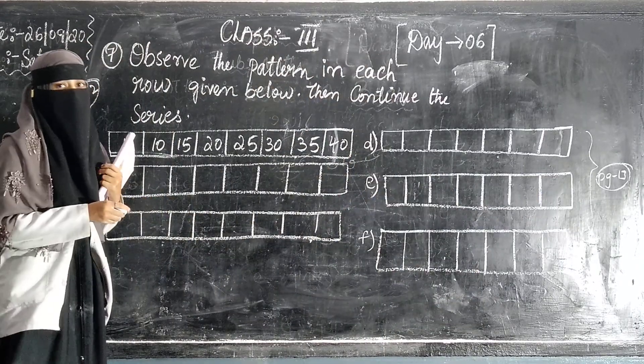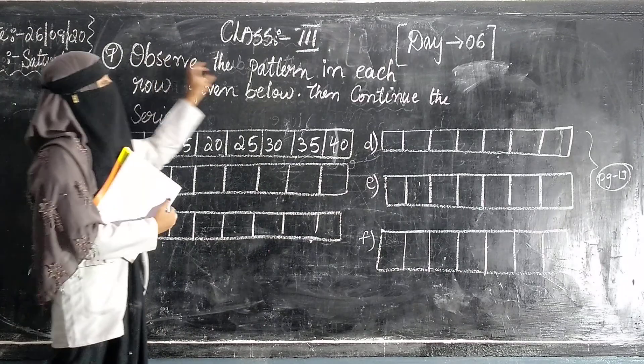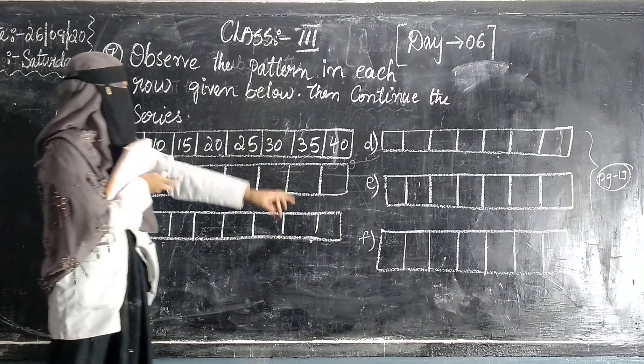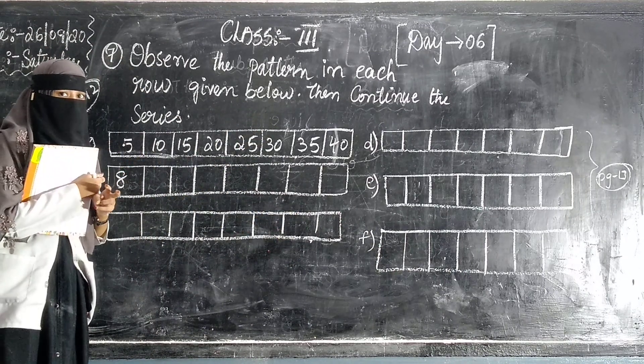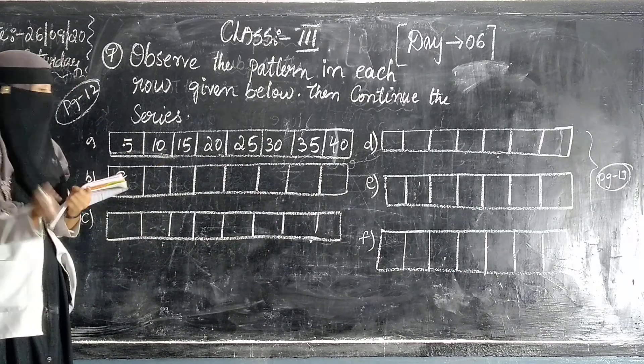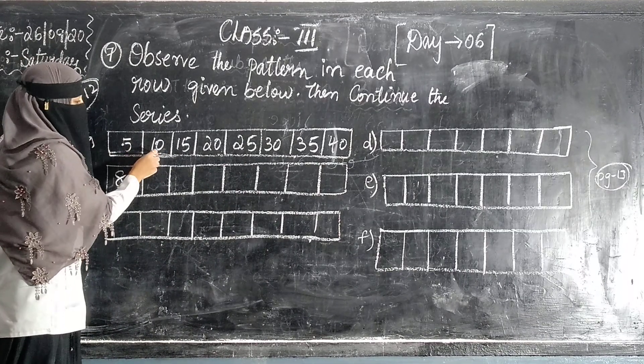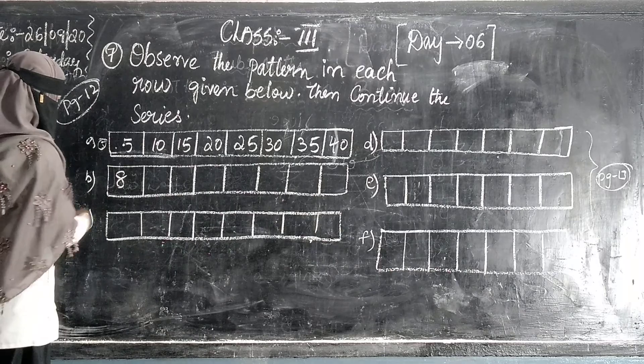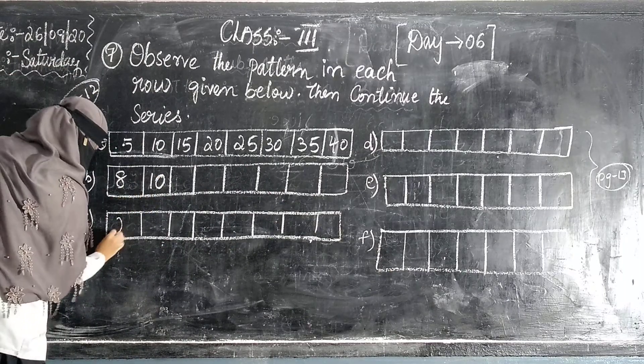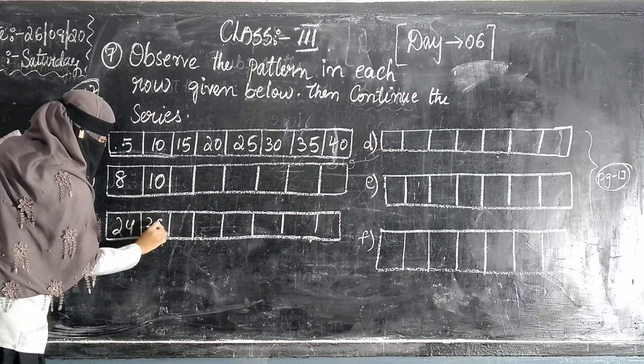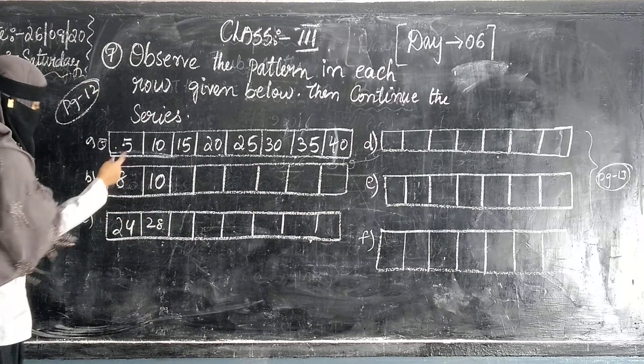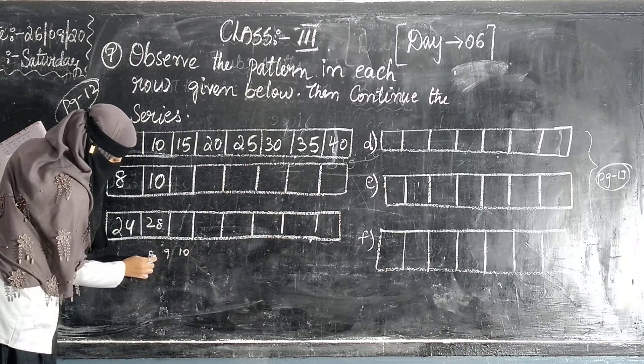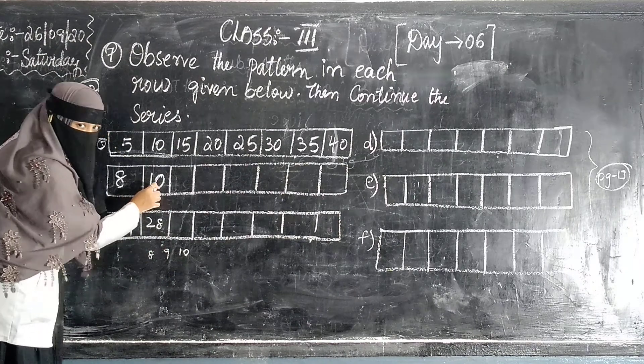Now you can do pattern. Observe the pattern in each row. Even row. Here you can do pattern. Then continue the series. Now you can do the previous bits. You can do this. First is done for you: 5, 10. How do we skip this? 5. And the second is 10.